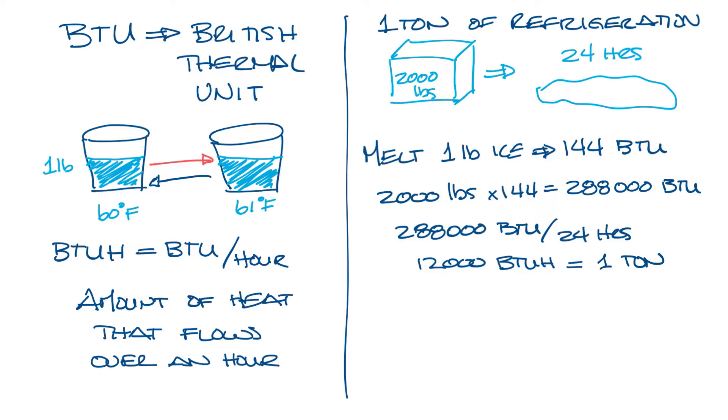So a good general rule is that one ton is 400 CFM. Now this isn't true all the time. It depends on your application, but you can use this for some rough math.